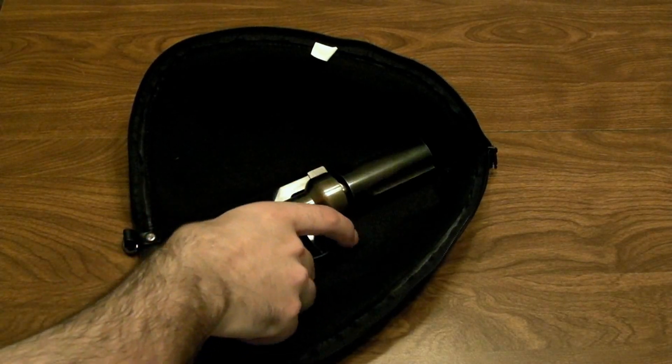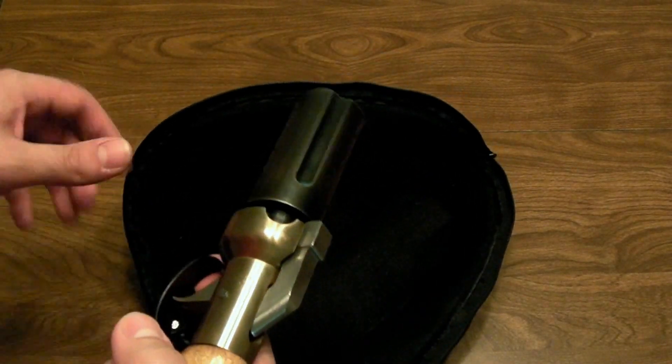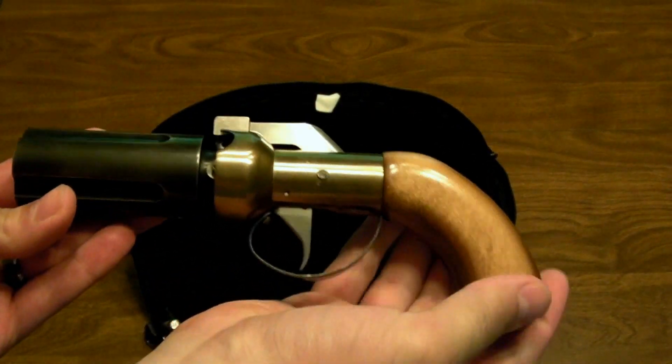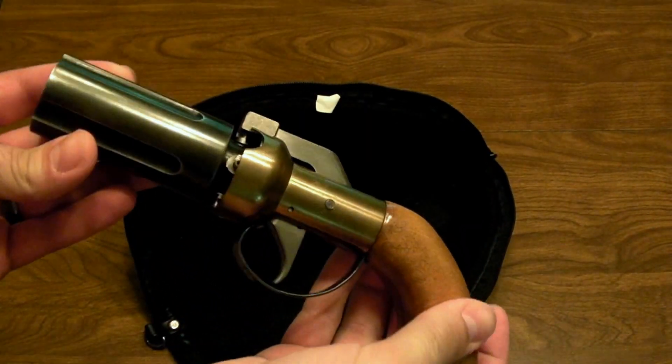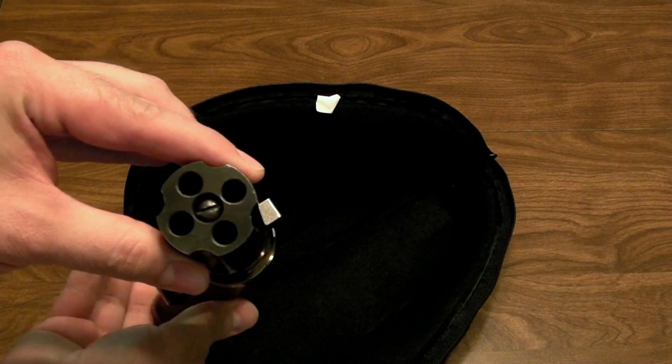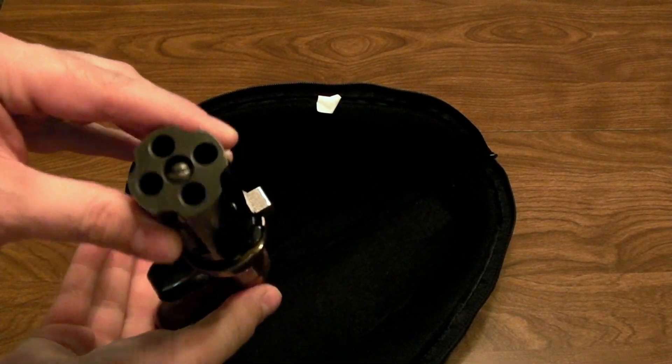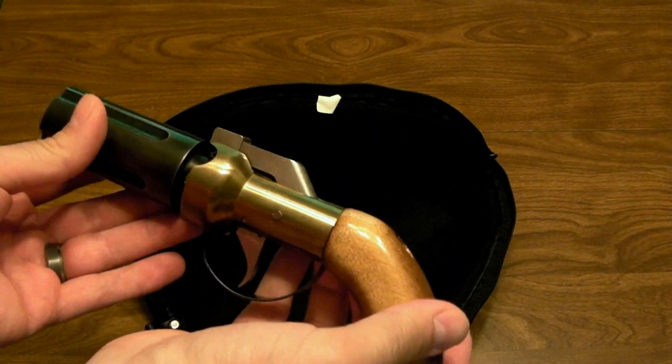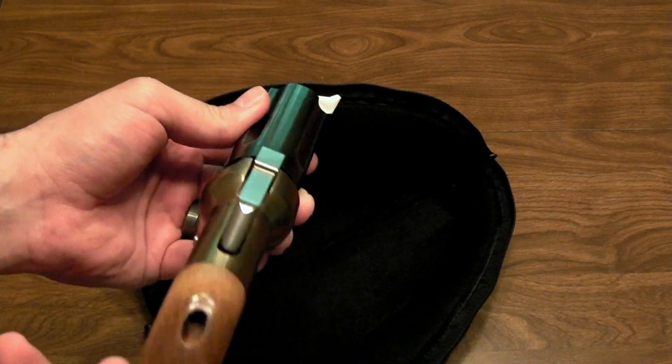Okay, so this is my Ethan Allen pepper box that I built from a kit. A pepper box is a predecessor to a modern-day revolver. You see it has four barrels on this one. Some of them had more, some of them had six or up to eight, I believe.